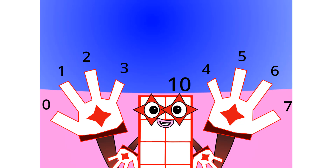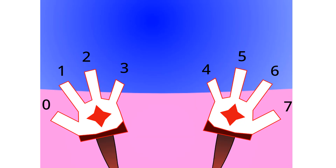Oh wow, looks like I am no longer octoblock, but I am still called 8. So yeah, this base has 8 digits: 0, 1, 2, 3, 4, 5, 6, and 7.